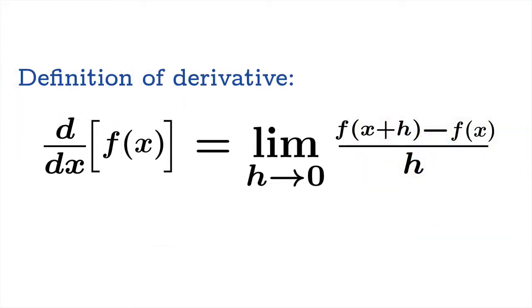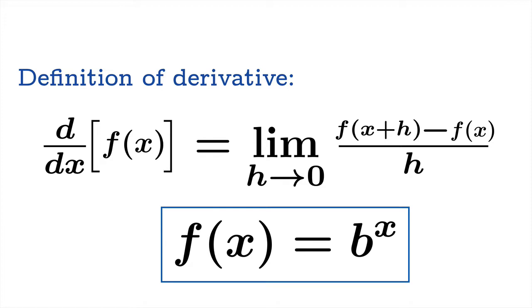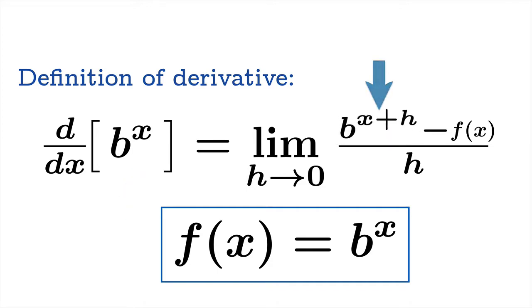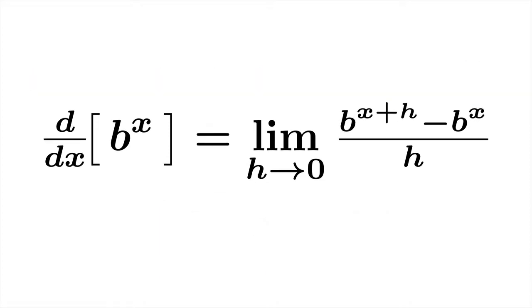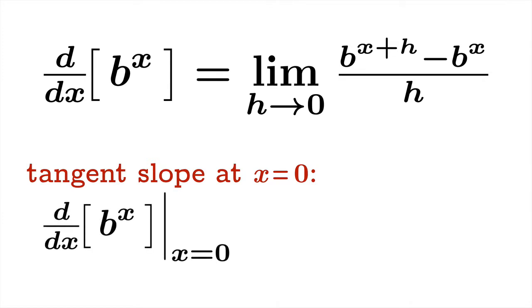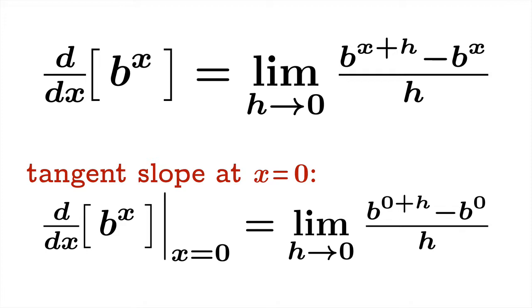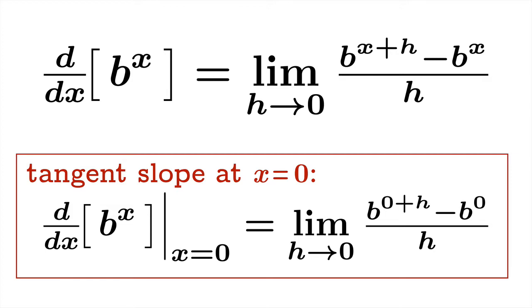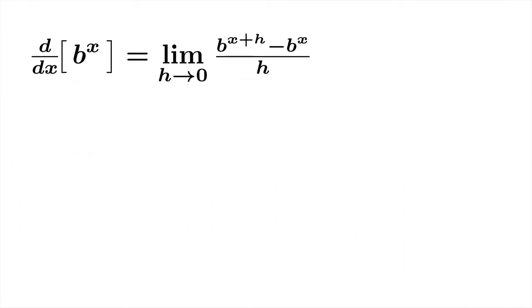Let's look at the definition of the derivative of an arbitrary function. The derivative of f(x) is the limit as h goes to 0 of f(x+h) minus f(x) over h. In our example, we'd like to study the case where f(x) equals b to the x. So swapping those in, we get b to the x plus h minus b to the x, all over h. It's worth considering a special case: the tangent slope at x equals 0, which gives us this expression when we plug in 0. We'll box this and set it aside — we'll need it later.